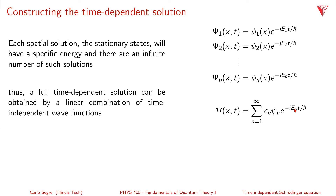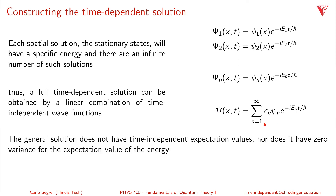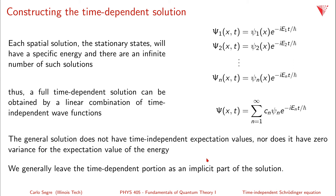Each of these energies is different, so this general state will have a nonzero variance in the Hamiltonian. The general solution does not have a time-independent expectation value, because the time-dependence cannot be pulled out — each term has a slightly different time-dependence depending on its energy. It also does not have zero variance for the expectation value of the energy. In practice, when discussing time-independent quantum mechanics we leave the time-dependent portion implicit, only discussing stationary states. When time-dependence is needed, we put back the factor e^(minus iEₙt/h-bar) for each stationary state.